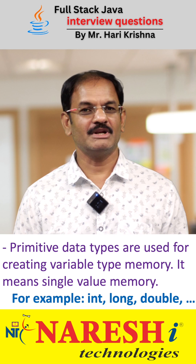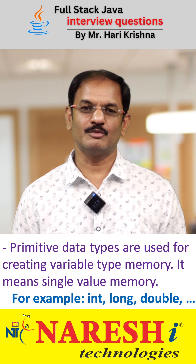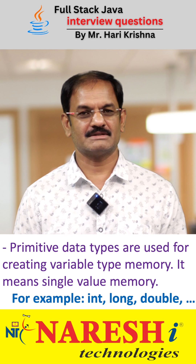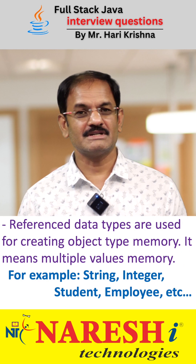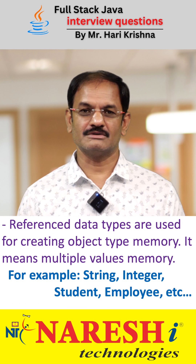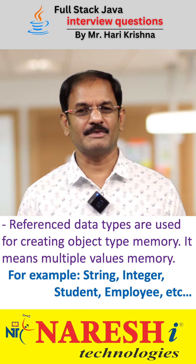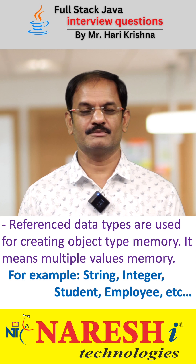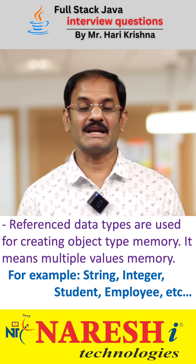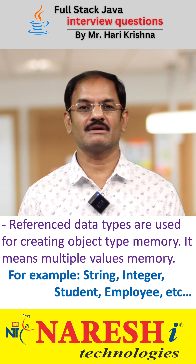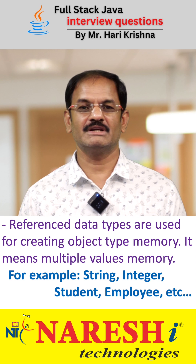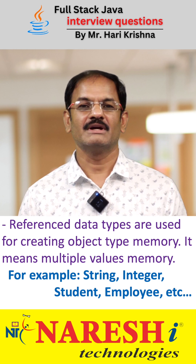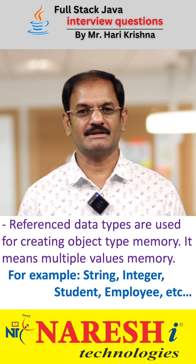For example, int, double, char, boolean — these all come under primitive data types. Next, reference data types are used for creating object-type memory for storing multiple values as one group. For example, classes like String, Student, Employee, Integer, ArrayList — all these classes come under reference data types.